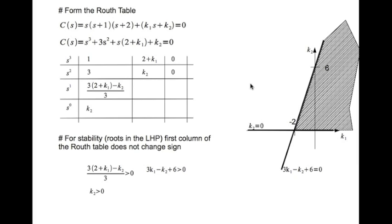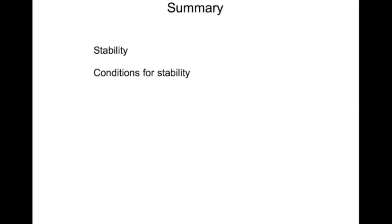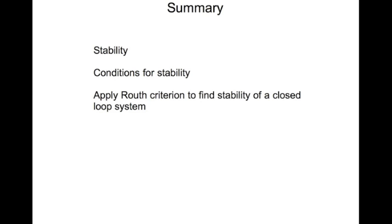To summarize: you should understand the concept of BIBO stability — if a system is stable, a bounded input always produces a bounded output. Remember that a system is unstable if the roots of the characteristic equation are in the right half plane — even one pole there makes it unstable. You should be able to determine stability using the Routh criterion and handle special cases: the first entry in the column going to zero, and the entire row going to zero.